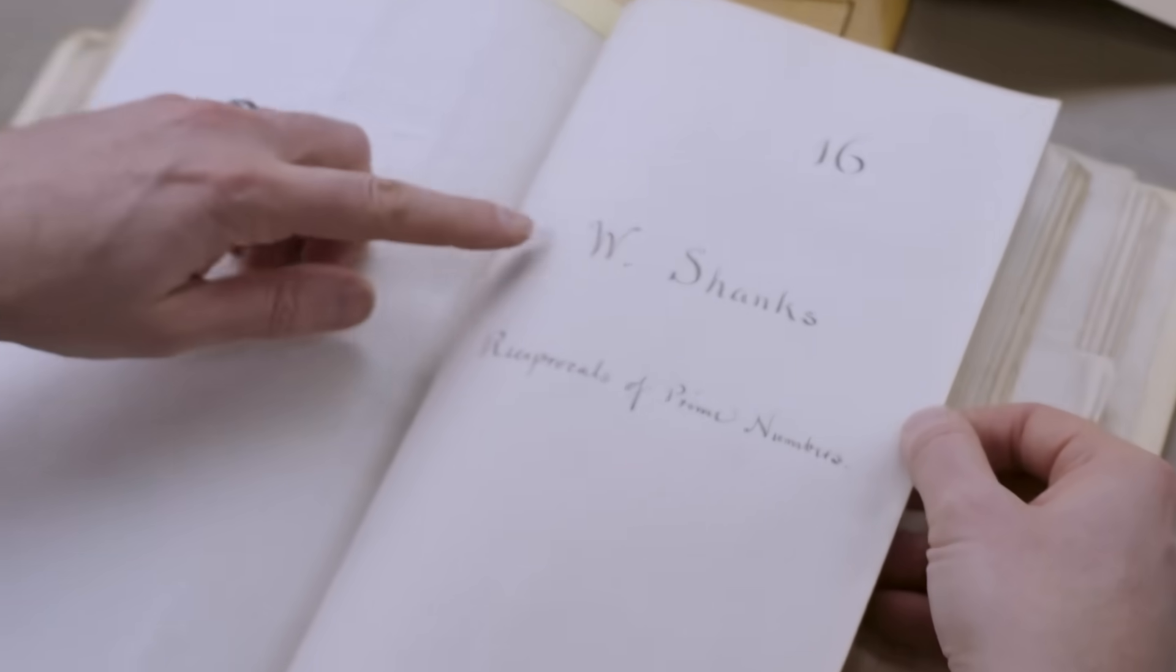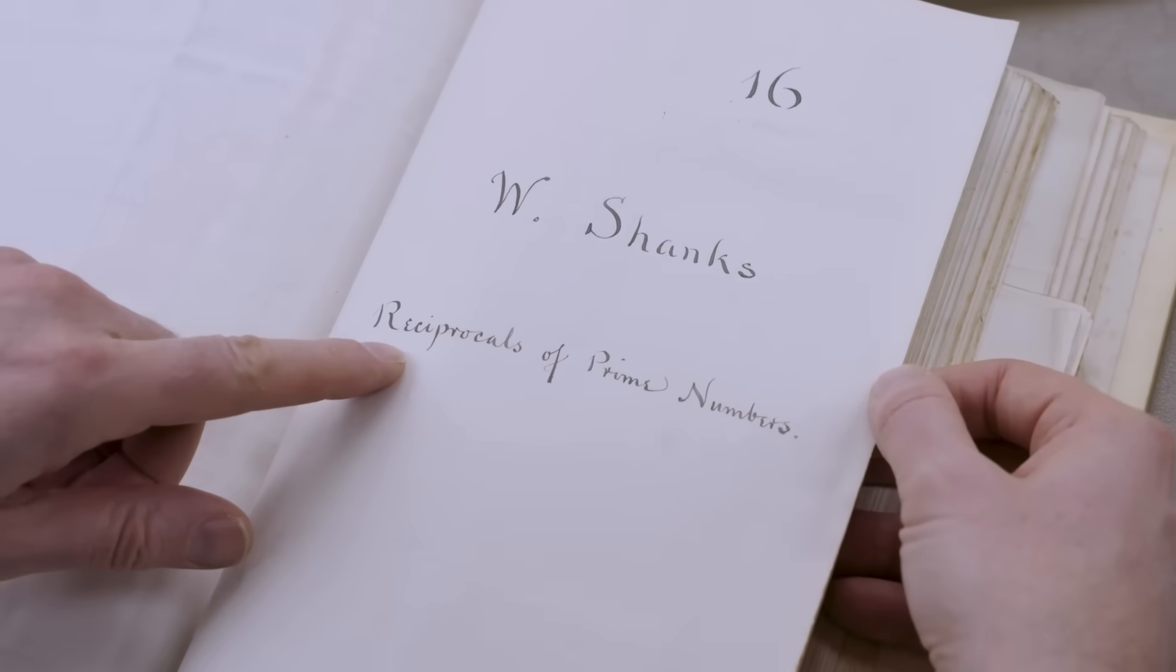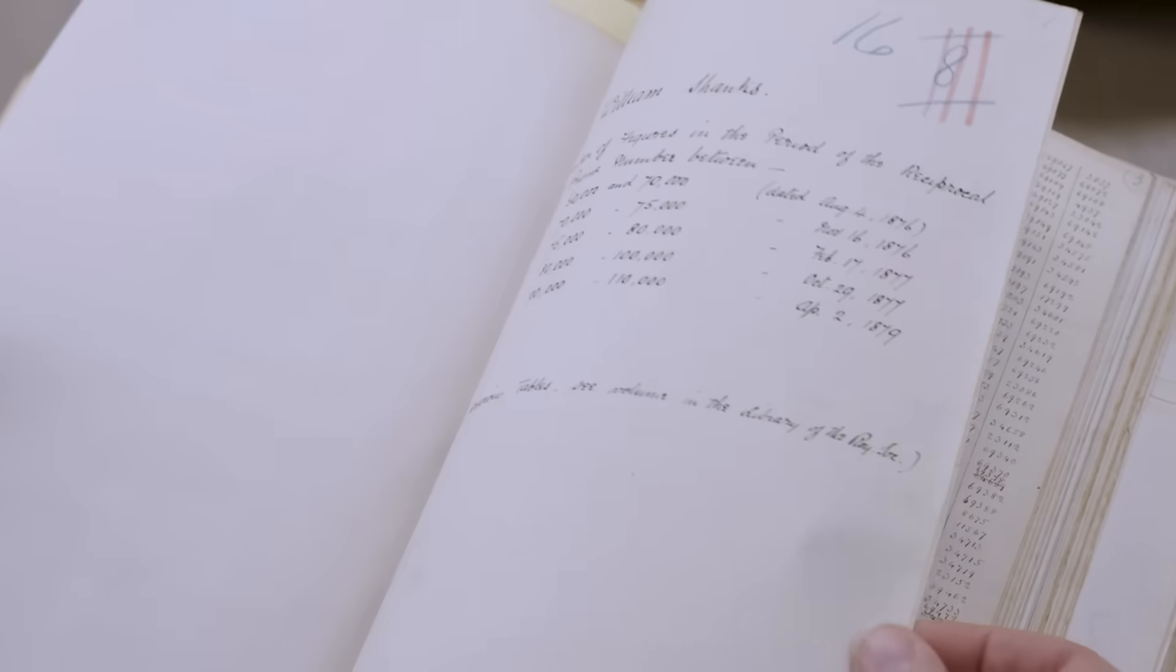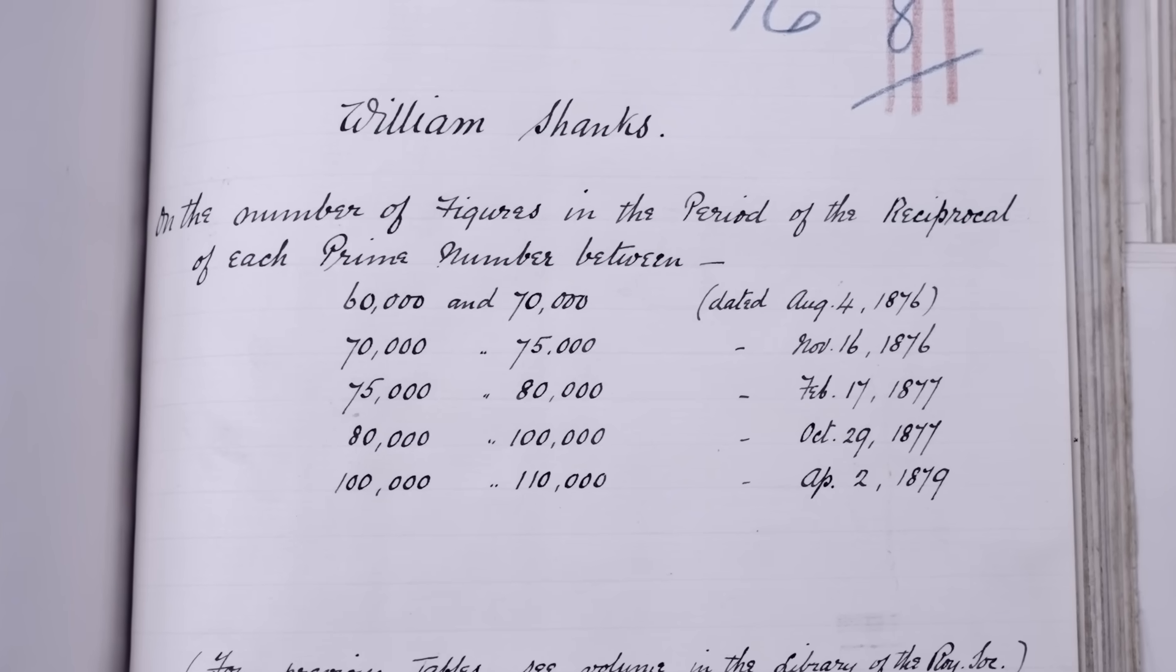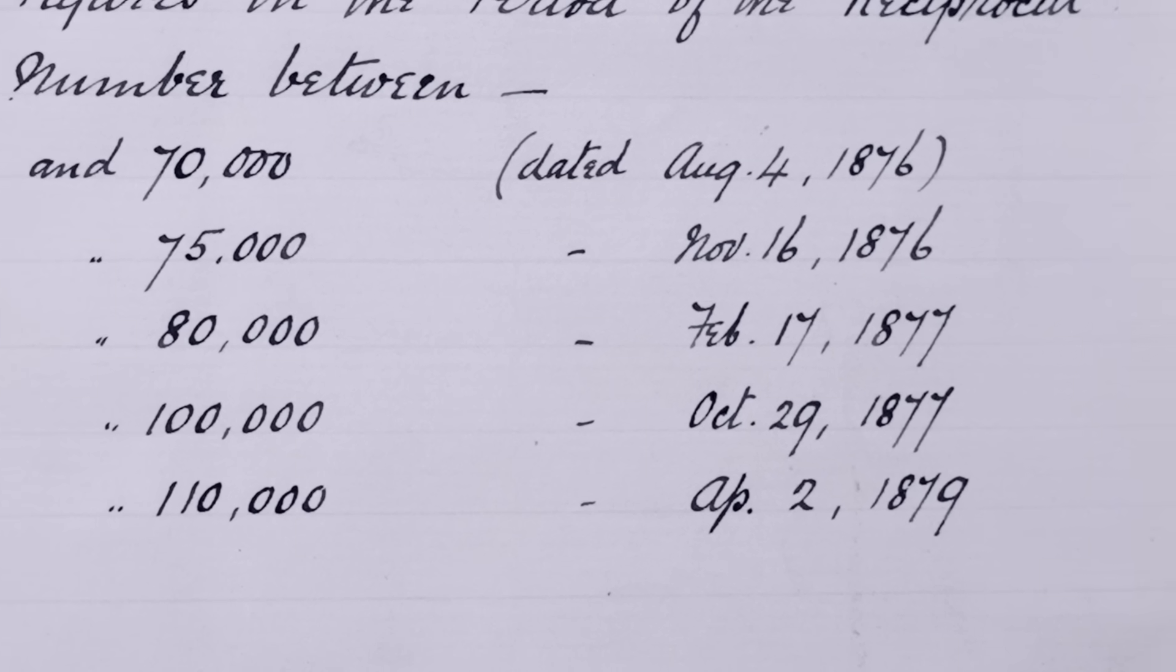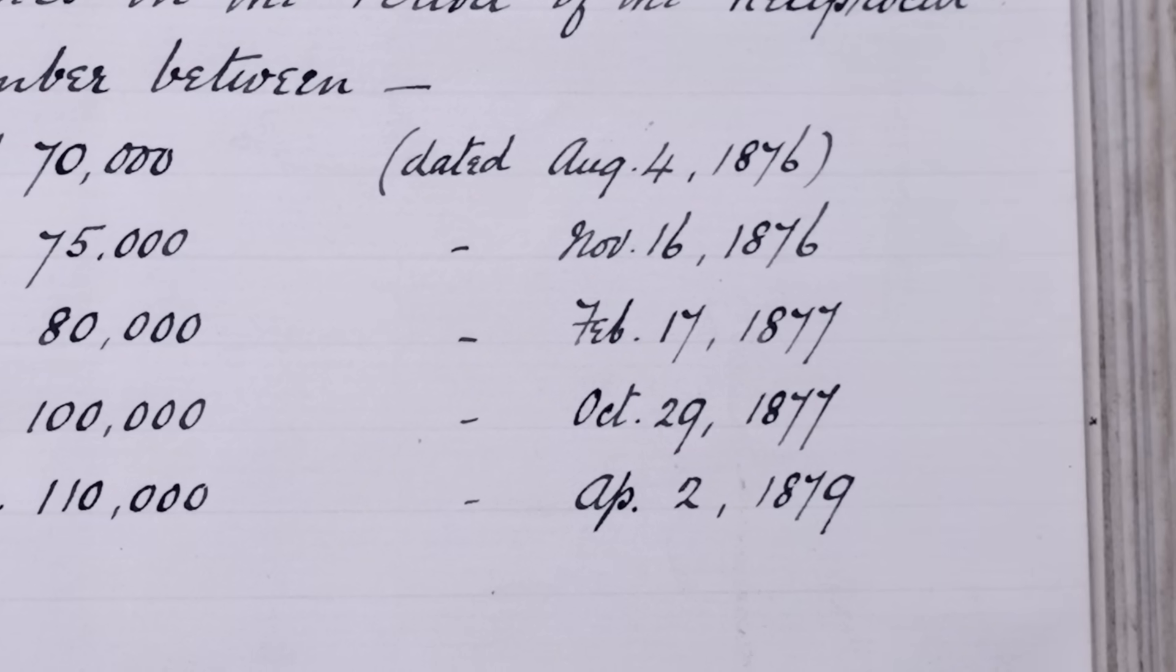William sent all of his incredible results into the Royal Society. Here we go, so this is W. Shanks, Reciprocals of Prime Numbers. And then what follows is, these are the sections, and when he did them, so you can see he's got them in batches of 10 to 5,000 at a time, and this is across years. This was not a fast process.